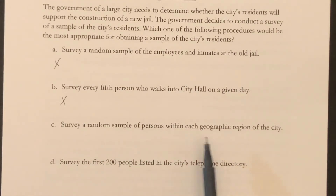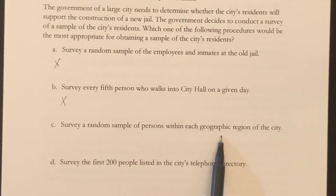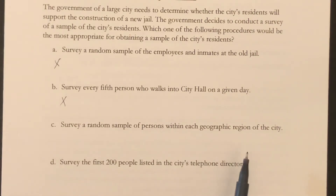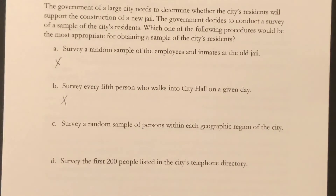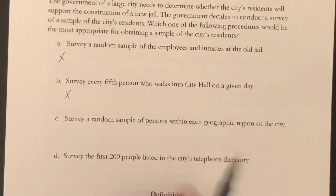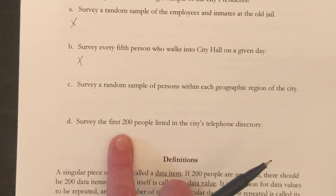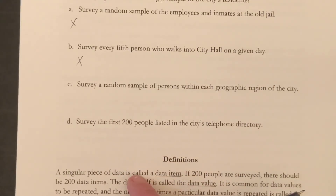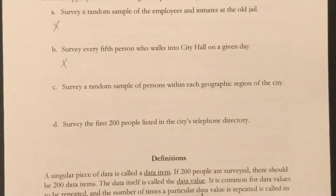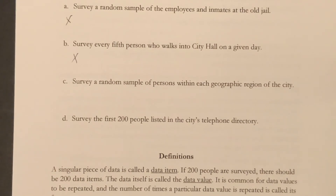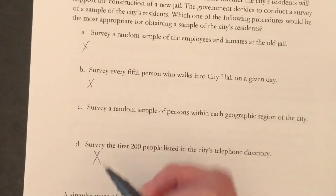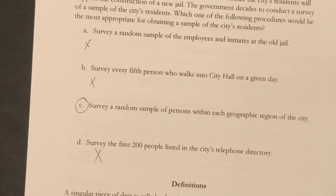Option C: survey a random sample of persons within each geographic region of the city. That's pretty good — it's going to hit the whole city, every geographic region, meaning you're likely to hit the poorer regions and the more expensive regions, and those dominated by minority groups or majority groups. You're going to have everybody represented. Option D: survey the first 200 people in the city's telephone directory. In a large city, the only people who could possibly be chosen would have a last name beginning with A, which does not mean every resident is equally likely to be chosen. So that's not it. C is your answer — that is your best choice.